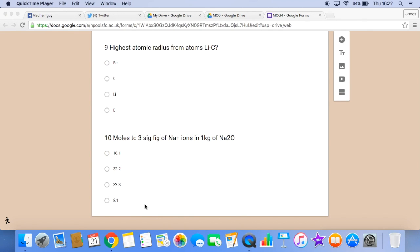And the final question, how many moles to three significant figures of sodium ions in a kilogram of sodium oxide? So the first thing we need to do is work out how many moles of sodium oxide we've got. So that's a thousand grams divided by the MR, which is 62.